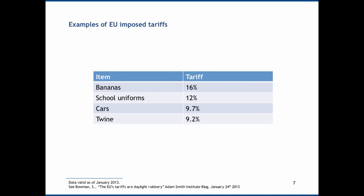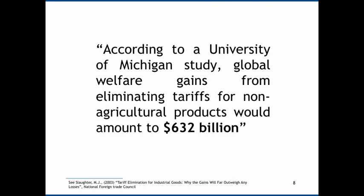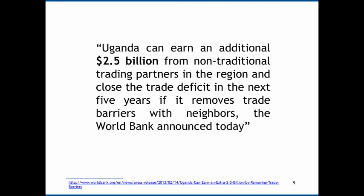Looking at some EU-imposed tariffs: there's a tariff of 16% on bananas, 12% on school uniforms, 9.7% on cars, and 9.2% on twine. These tariffs favour domestic producers at the expense of domestic consumers and the economy as a whole due to deadweight loss. According to a University of Michigan study, global welfare gains from eliminating tariffs on non-agricultural products would amount to $632 billion. The World Bank also reported that Uganda would earn an additional $2.5 billion if trading partners removed trade barriers with their neighbours.